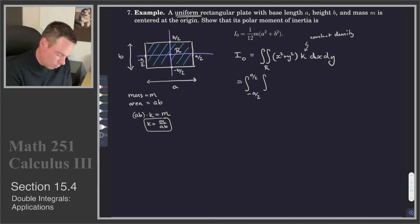So I'll go -A/2 to A/2. And then the Y integral will be -B/2 to B/2. And then we've got x² + y². That's dy dx.